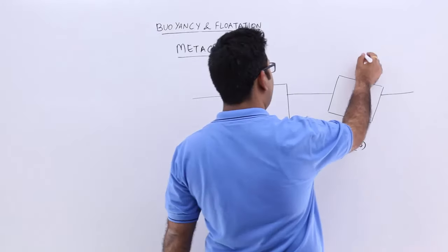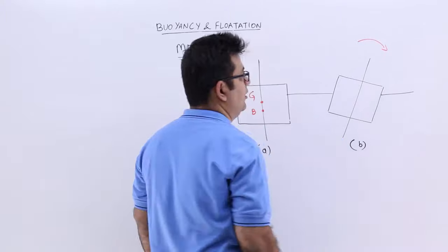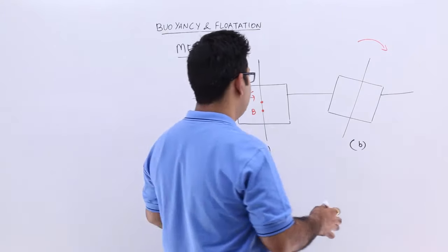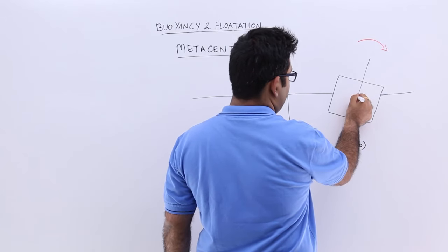When we give it a small angular displacement in the clockwise direction, the center of gravity remains on the same axis.